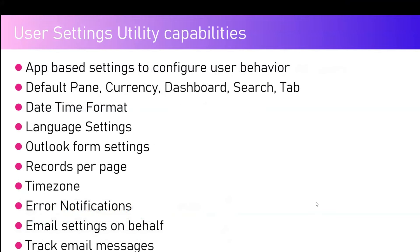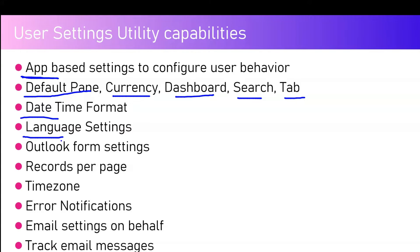There are various capabilities in User Settings Utility. You can configure settings based on the app — if you have five apps and select one, you can configure settings for that specific app. Parameters you can set include the default pane for the user, currency, dashboard, search parameters, and default tab. All those things can be set as part of the user settings configuration.